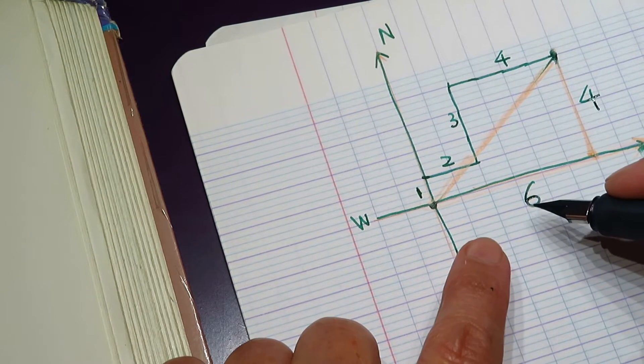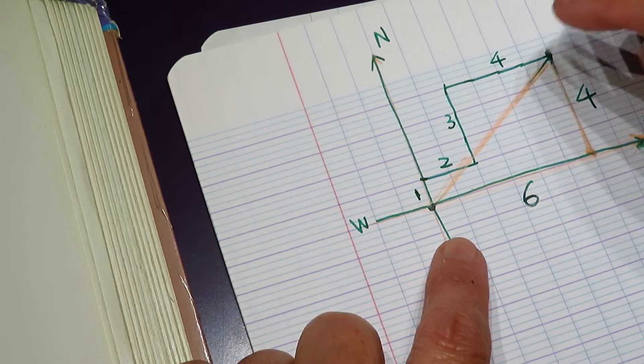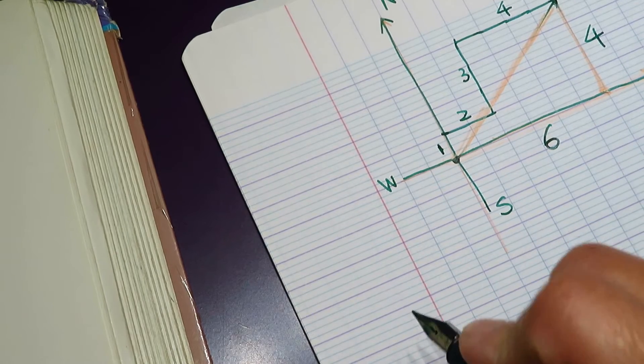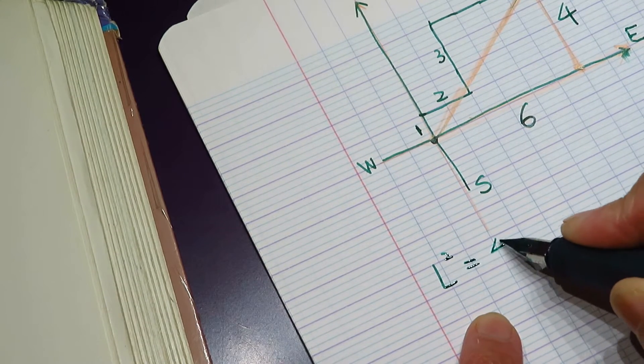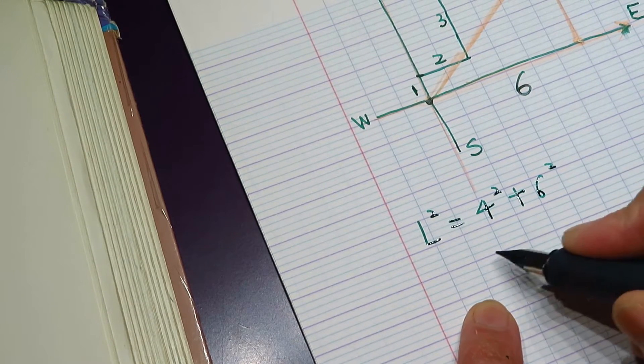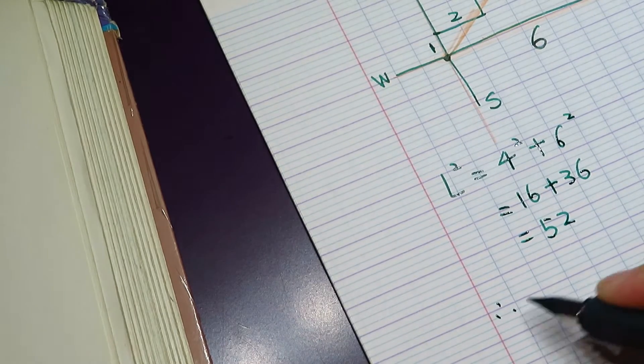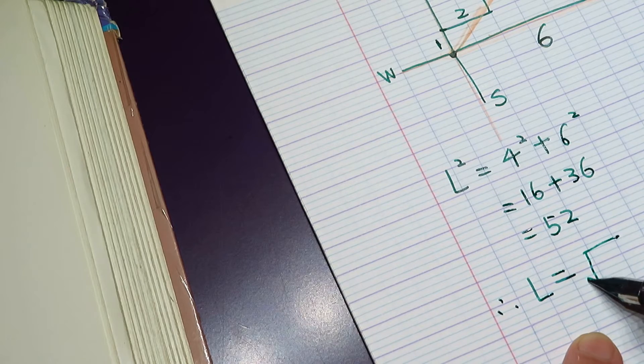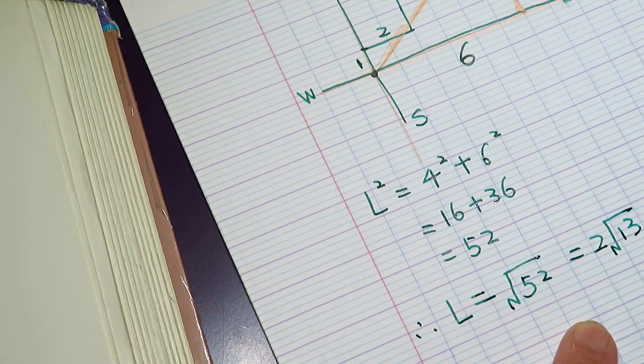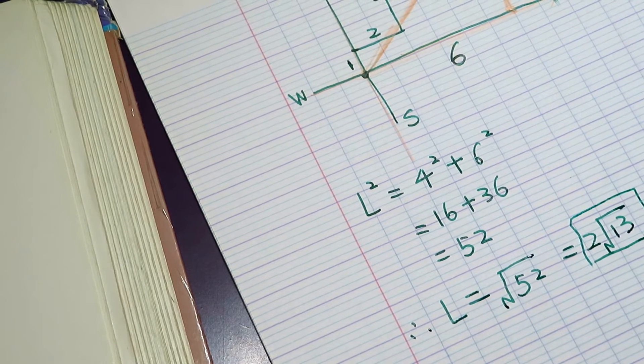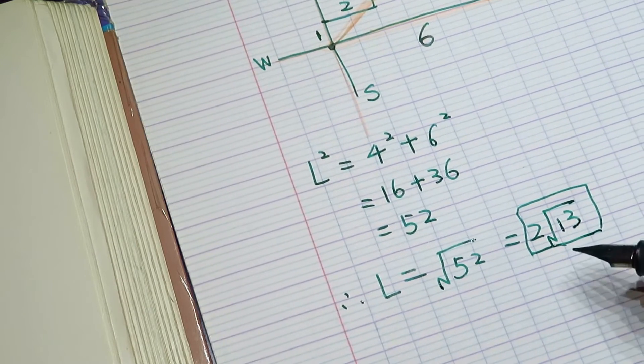According to Pythagorean theorem, the square of the two sides equal to the square of hypotenuse. So the length square equals four square plus six square equals 16 plus 36 equals 52. So L equals square root of 52 equals 2 times square root of 13. So the length is 2√13 kilometers from the original point.